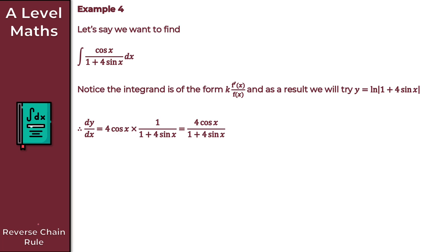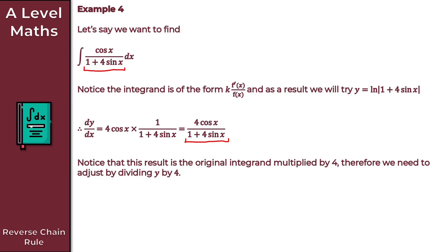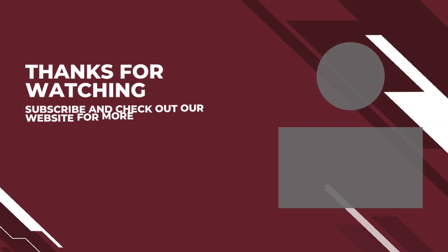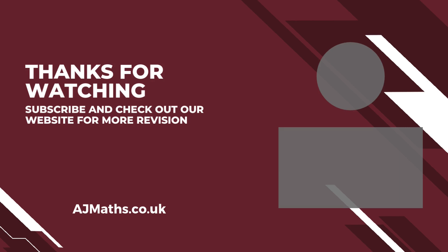Comparing dy/dx to the original integrand, this result is the original integrand multiplied by 4. Therefore we adjust by dividing y by 4. The integral of cos x all over 1 plus 4 sin x with respect to x equals 1 over 4 ln of 1 plus 4 sin x plus c, where plus c is our constant of integration. That gives us the solution to example 4 and brings us to the end of this video on the reverse chain rule.